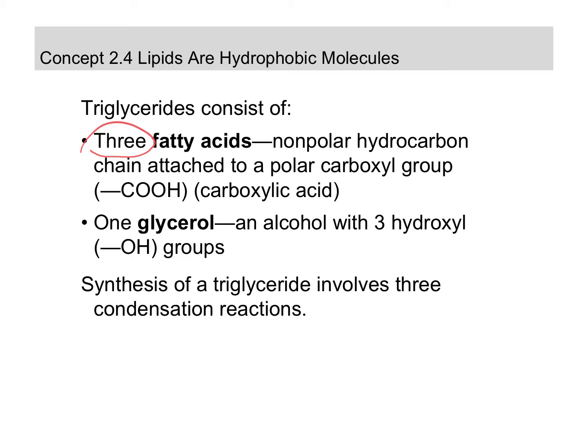You have one glycerol, which acts as the backbone. Glycerol is an alcohol with three hydroxyl groups, and so the synthesis of a triglyceride would involve three condensation reactions. You don't really need to know the detailed structure of the triglyceride — we are going to draw it in a very generic form. This would be the fatty acids coming off of that glycerol backbone.